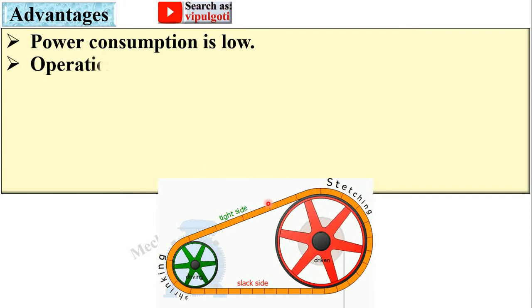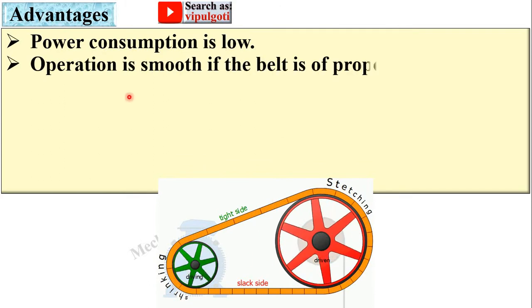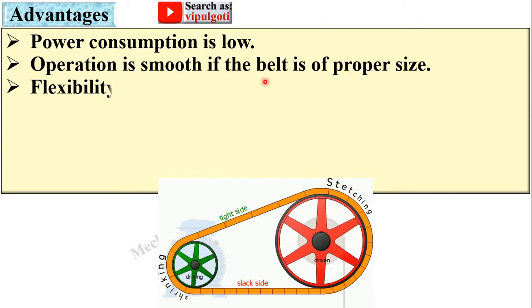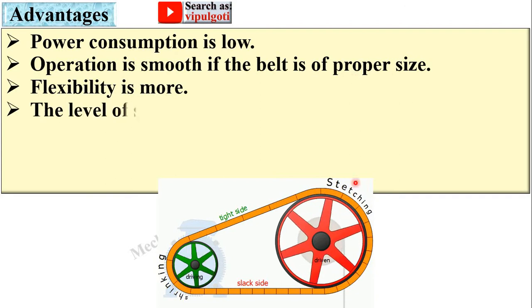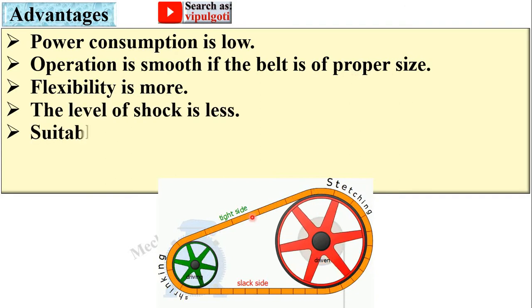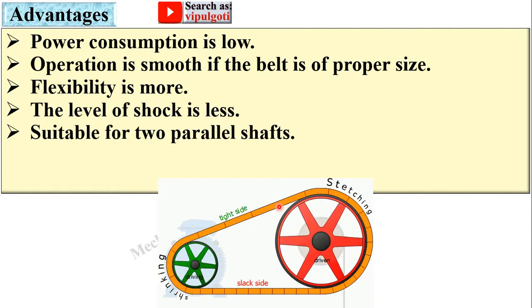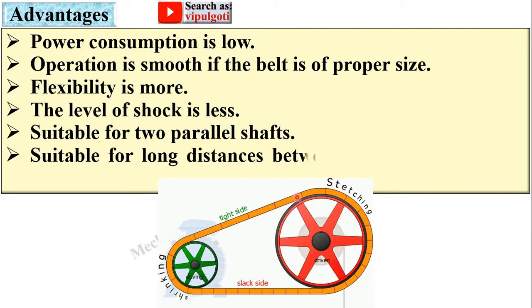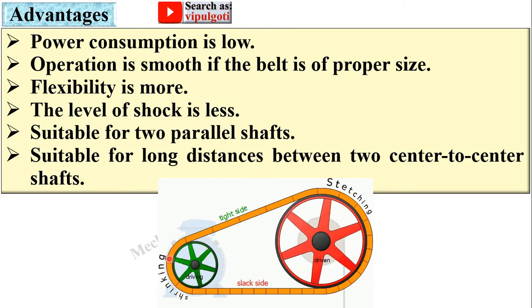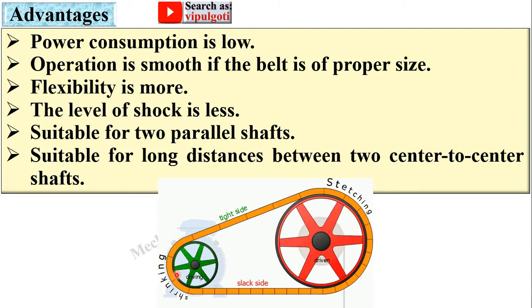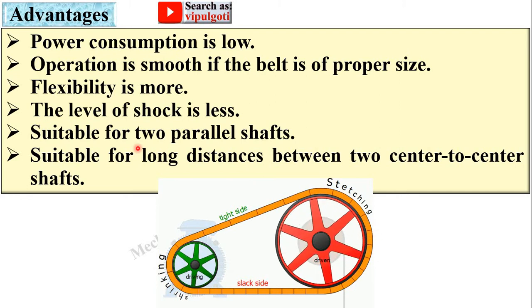Power consumption is low in case of belt drive. Operation is smooth if the belt is of proper size. Flexibility is more because it can bend. Suitable for two parallel shafts. Suitable for long distances between two center-to-center shafts. Generally, belt drive is suitable for moderate to large distances between shafts.